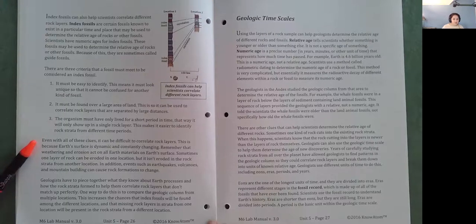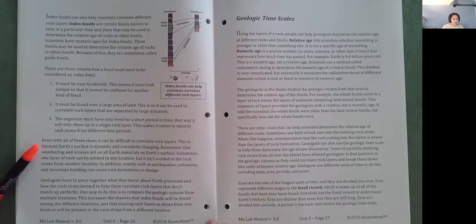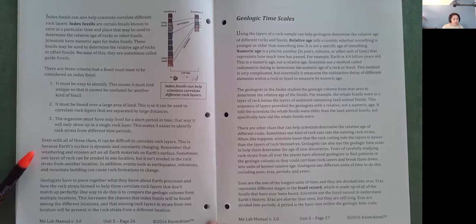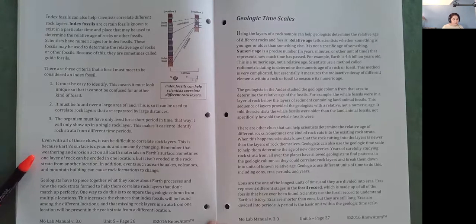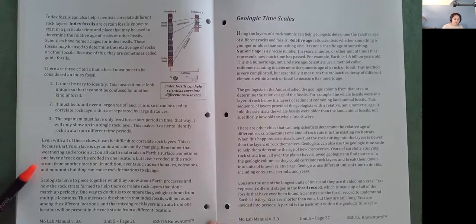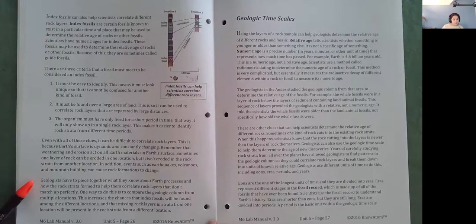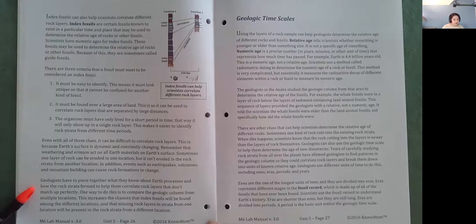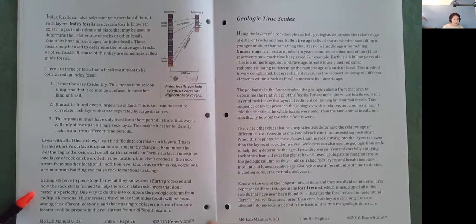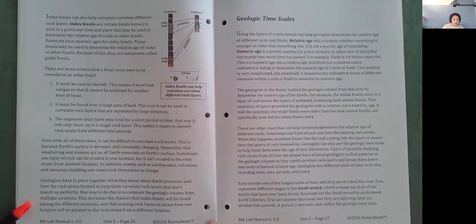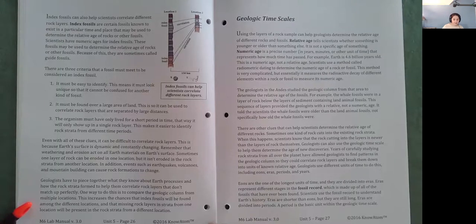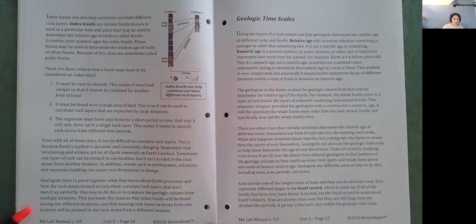Even with all of these clues, it can be difficult to correlate rock layers. This is because Earth's surface is dynamic and constantly changing. Remember that weathering and erosion act on all Earth materials on Earth's surface. Sometimes one layer of rock can be eroded in one location, but it isn't eroded in the rock strata from another location. In addition, events such as earthquakes, volcanoes, and mountain building can cause rock formations to change. Geologists have to piece together what they know about Earth's processes and how the rocks strata form to help them correlate rock layers that don't match up perfectly. One way to do this is to compare the geologic column from multiple locations. This increases the chances that index fossils will be found among different locations, and that missing rock layers and strata from one location will be present in the rock strata from a different location.